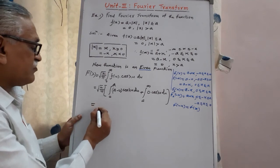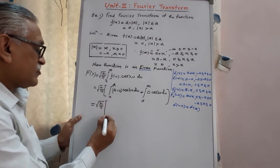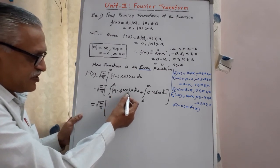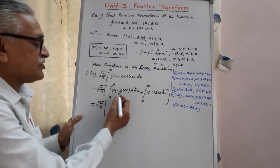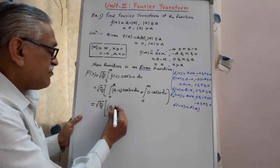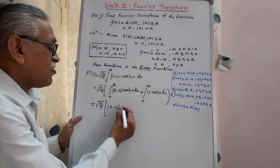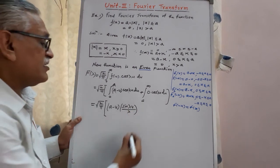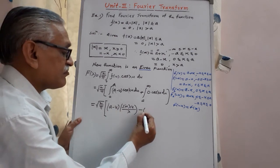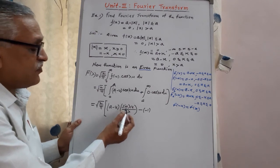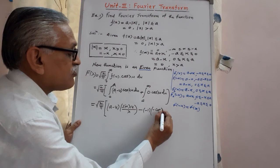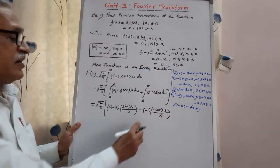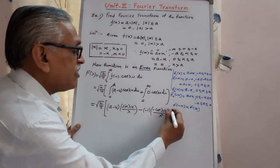Integrating using the generalized LIATE rule — first term algebraic, second trigonometric — the first term is a minus u, integration of cos gives sin lambda u upon lambda, then minus the derivative of a minus u which is minus 1, times the next integration which is minus cos of lambda u upon lambda squared. Limits are from 0 to a.